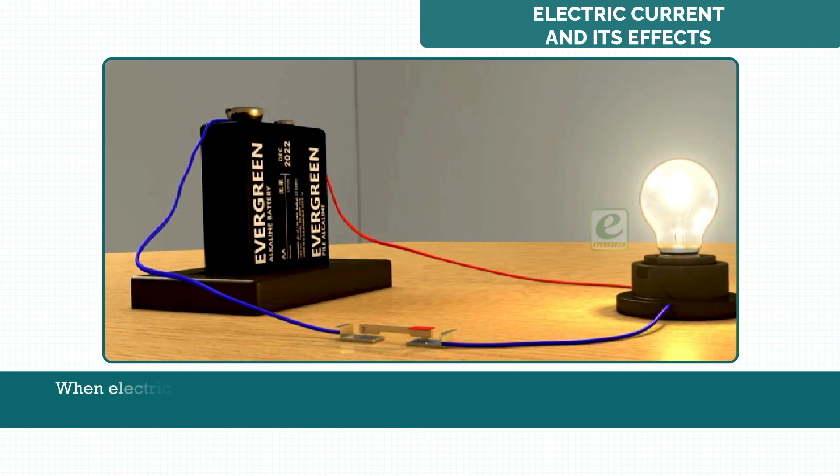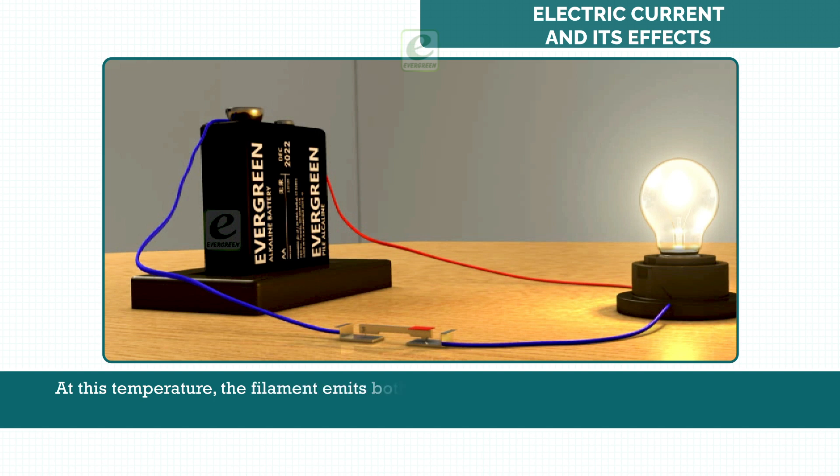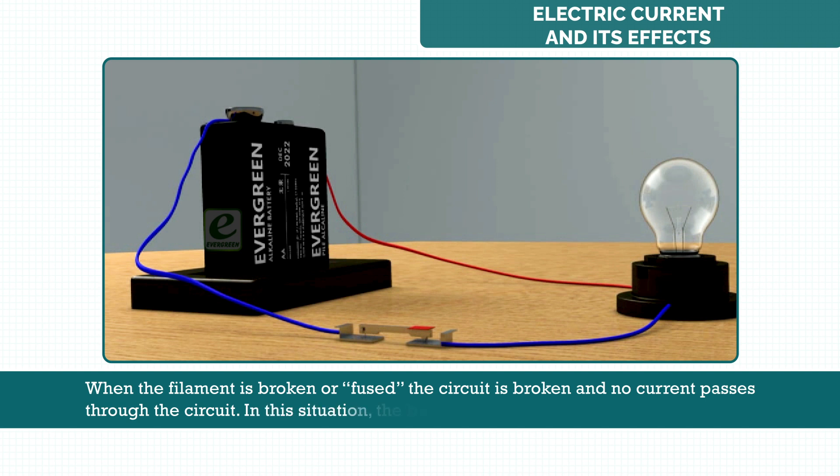When electric current is passed through an electric bulb or lamp, it heats up the tungsten filament of the lamp to a high temperature. At this temperature, the filament emits both heat and light. When the filament is broken or fused, the circuit is broken and no current passes through the circuit. In this situation, the bulb does not glow.